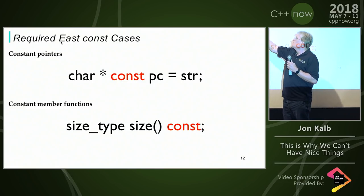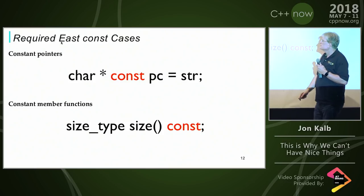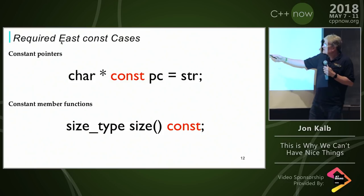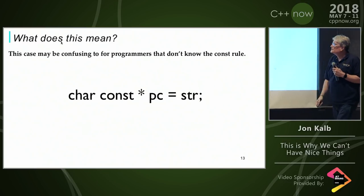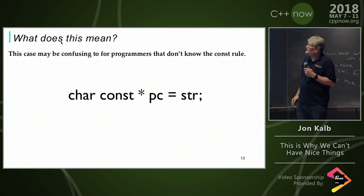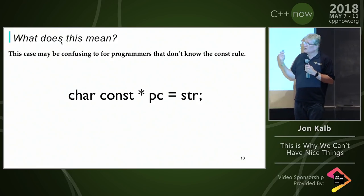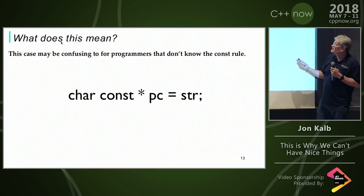This has to be East const because we are saying that the pointer is const. If you put the const on the other side of this, it would be the char that's const, not the pointer. And if you have a constant member function, of course, the const follows the declaration of the member.